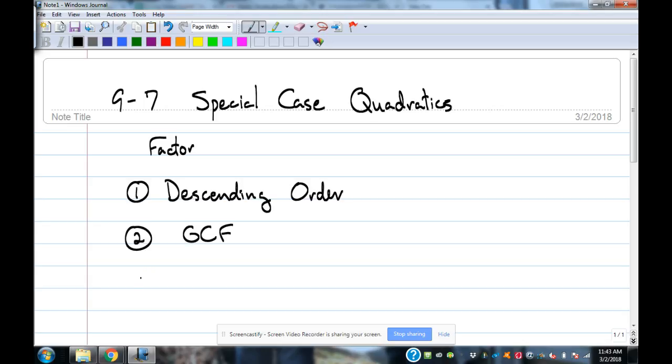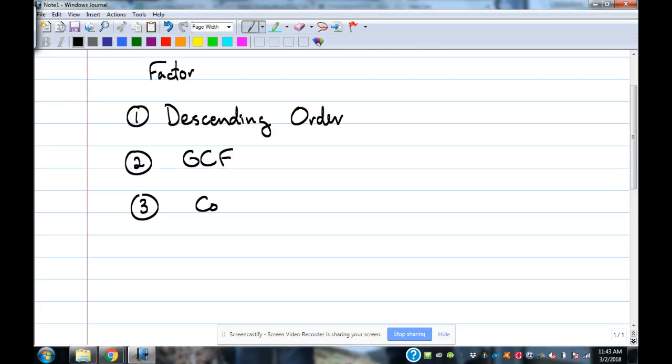Second, GCF, always. Third thing we're doing is counting terms. If there are four terms, what method do we use to factor? Grouping.